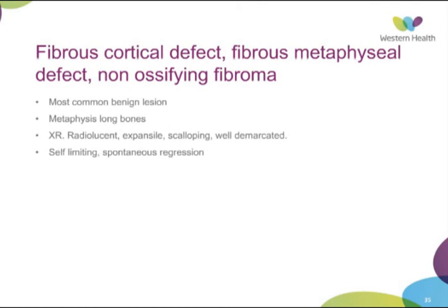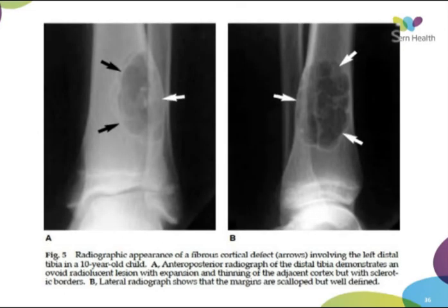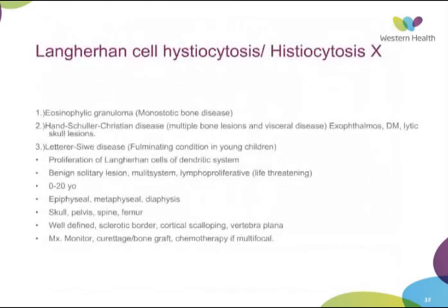Fibrous cortical defect or non-ossifying fibroma — two names for the same condition — is probably the most common benign lesion we see. They occur in long bones and are radiolucent, expansile, scalloping, and usually well-demarcated on x-ray. Treatment is usually just monitoring as they are self-limiting with spontaneous regression — it's more about counselling parents and the patient. Occasionally they require extended curettage and supplementing with bone grafting or cementing. Classic examples show eccentric, cortical-based, expansile, and very well-demarcated lesions.